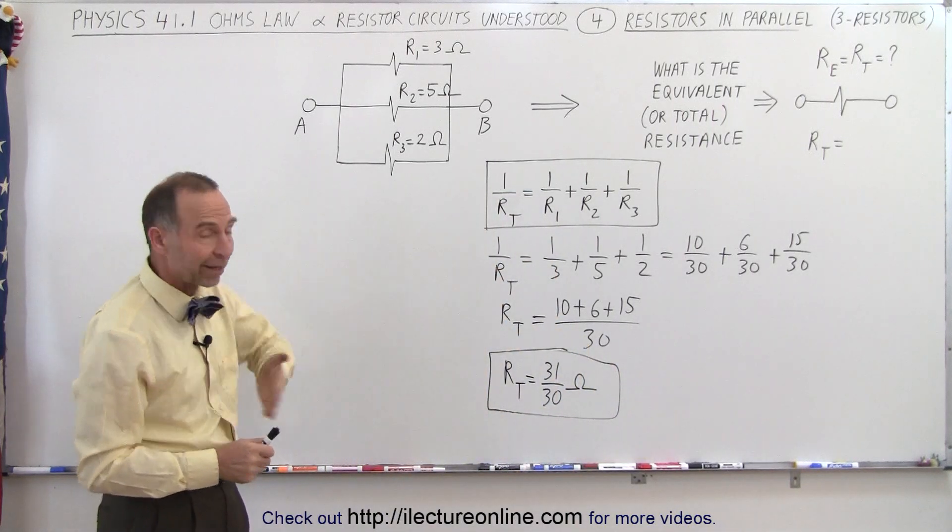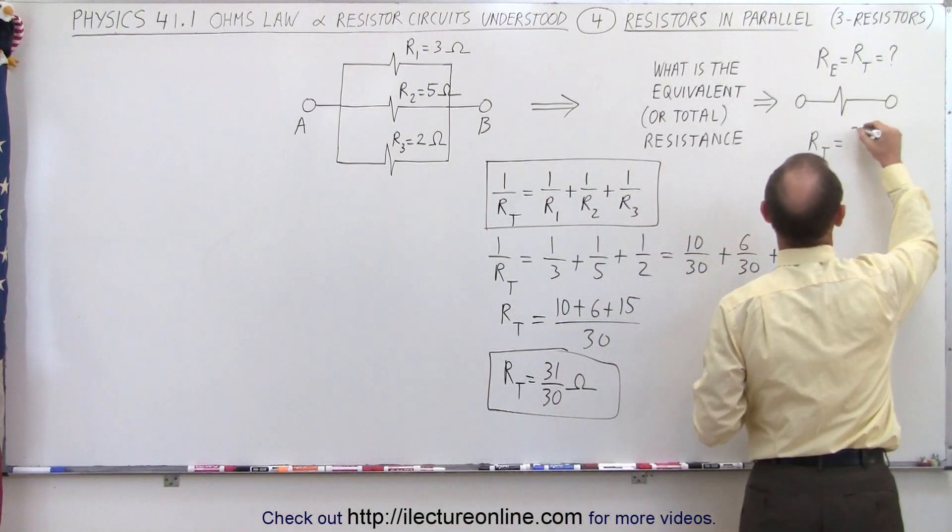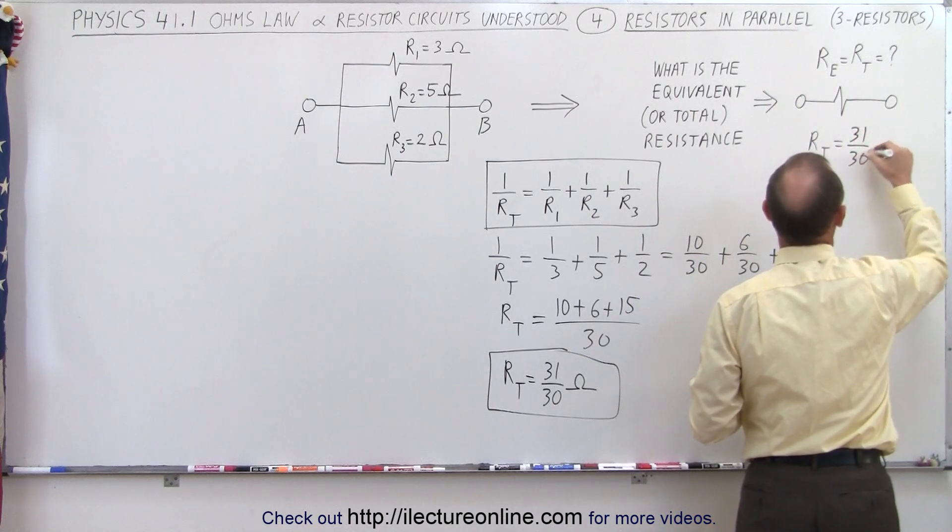So, if I was going to replace those three by a single equivalent resistor, it would then be a resistor with a resistance of 31 divided by 30 ohms.